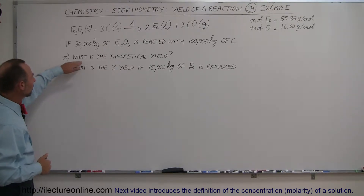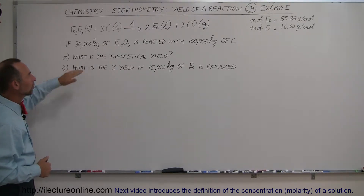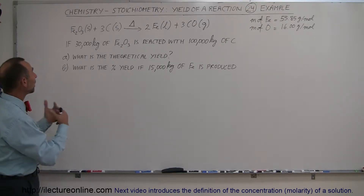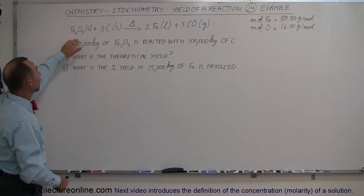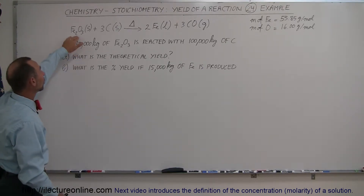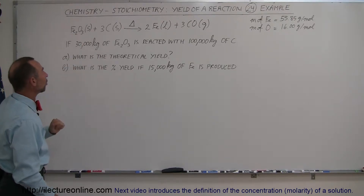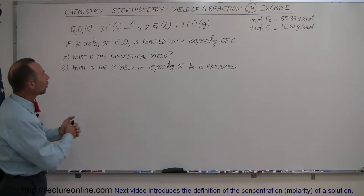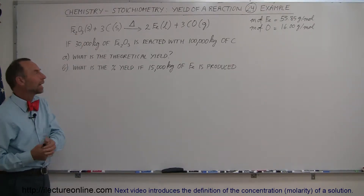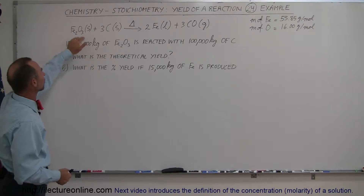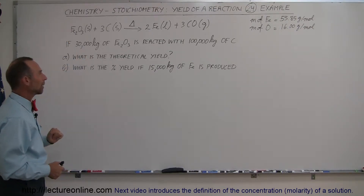The question now is: what is the theoretical yield? How much do we think we can get out of it? Well, if 100% of this ore gets processed and the iron gets separated from the ore — we get all the iron out — then how much would we get if the amount we started with is 30,000 kilograms?